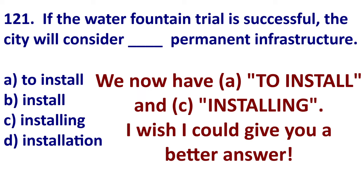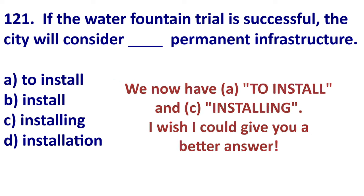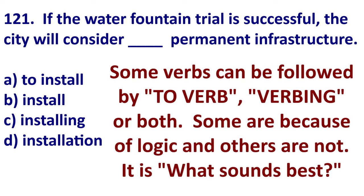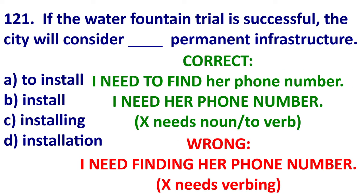Now we have to choose between 'to install' and 'installing.' Unfortunately, this is not based on your grammar skills — this is based more on memory. For some verbs, we can have infinitives after them, and an infinitive is 'to verb.' Other verbs are followed by verb plus -ING. For example: I need to find her phone number — that's correct. It's wrong to say I need finding her phone number. So after 'need,' we use the infinitive: to verb, or just a noun.